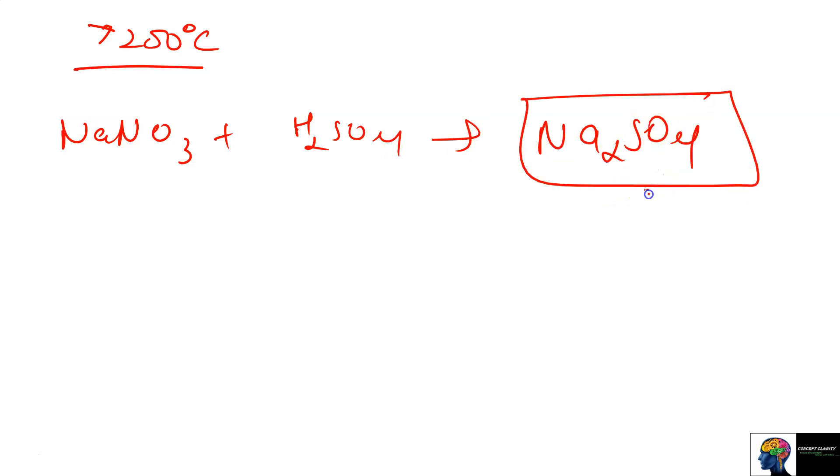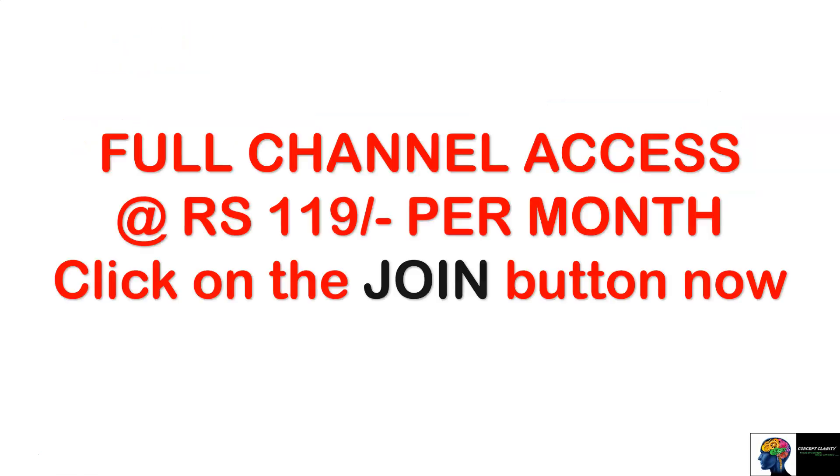If the temperature exceeds 200, then the reaction also changes. NaNO3 plus H2SO4, if we can see what will happen, it forms Na2SO4, sodium sulfate. So this is a very hard layer, it cannot be removed, that's why we don't use this temperature above 200 degrees.